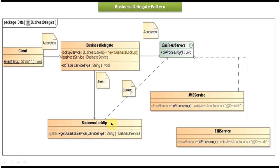On the left side you can see business lookup, and it has a get business service method. Here we have to pass the service type as a string. Based on the service type passed, it will do the lookup and return the corresponding business service object to the business delegate. If we pass service type as JMS, it will return the JMS business service object. If we pass EJB, it will return the EJB business service object.